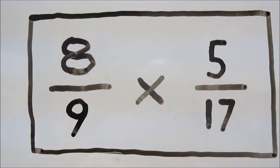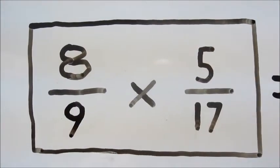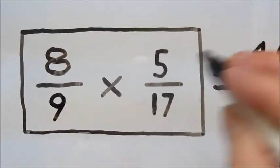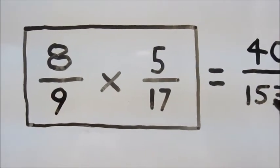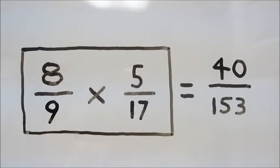Since we can't cross-cancel, the only thing we do is multiply across. 8 times 5 gives us 40 and 9 times 17 gives us 153 for a final answer of 40 over 153.